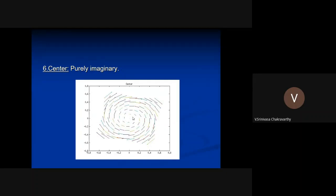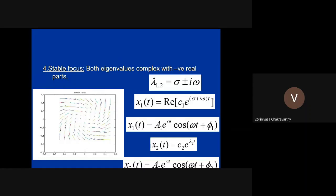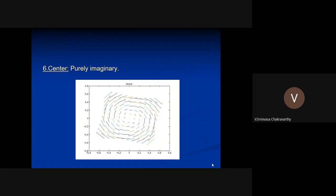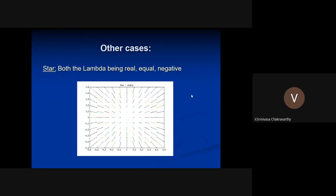Another case: eigenvalues are purely imaginary (σ = 0). The e^(σt) term equals 1, so x1 = a1·cos(ωt + φ1) and x2 = a2·cos(ωt + φ2) — pure sinusoids. Plotting them gives an ellipse (or circle if amplitudes are equal). The orbit neither decays toward the center nor flies away; wherever you start, it keeps going in a closed loop. This fixed point is called a center.